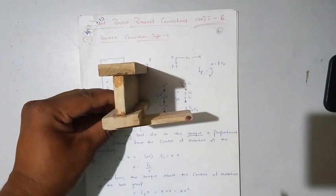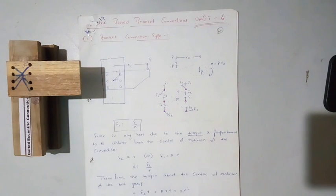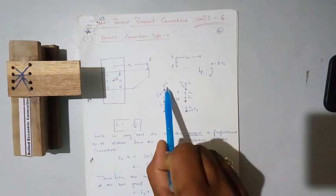Collar connected with the bracket. This point is called the bolt group, so this point is called the center of the bolt group. Here you can see a bracket connected to a column with n number of bolts. Each bolt is subjected to two forces.